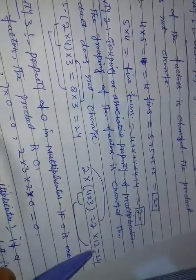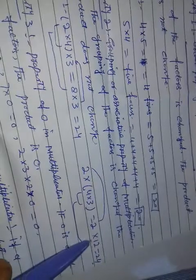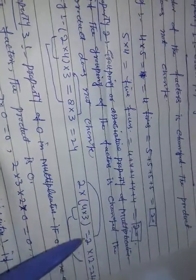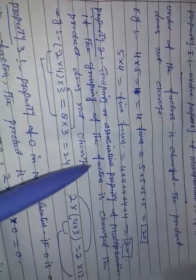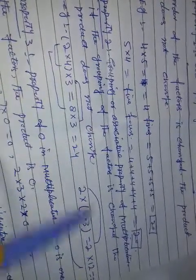Or 2 into 12, 4 into 3 is 12, 2 into 12 is 24. So 8 threes are 24, 2 twelves are 24. If the grouping of the factors is changed, the product does not change.